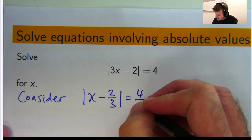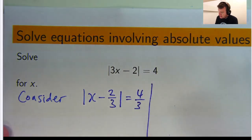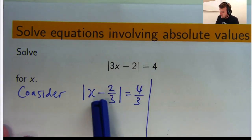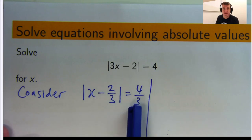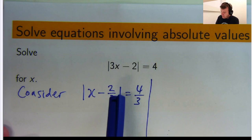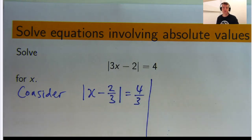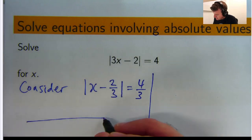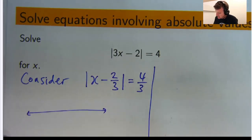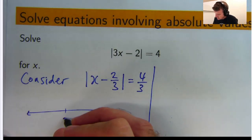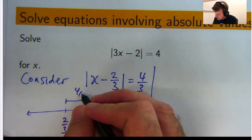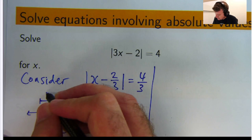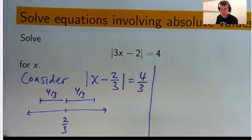And now what I can see, and I'll draw a little line down here. Now what I can see is that I'm looking for the x points that are exactly 4 thirds of a unit away from the point 2 thirds. So if I draw in my little number line here, I'll start at 2 thirds. I'll go 4 thirds that way, and I'll go 4 thirds that way.